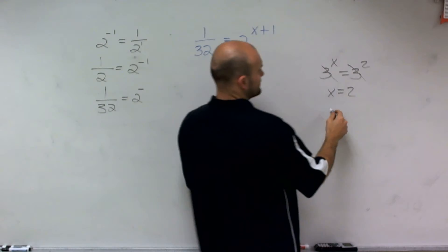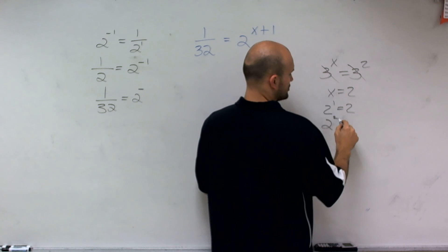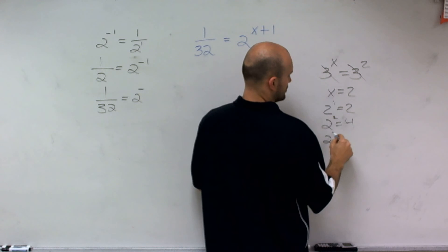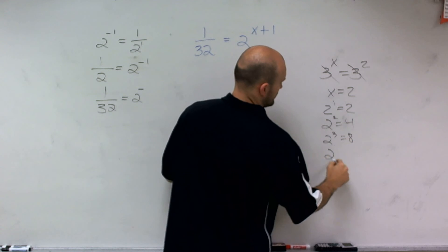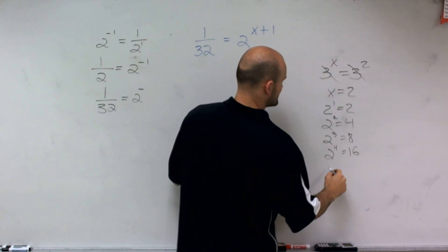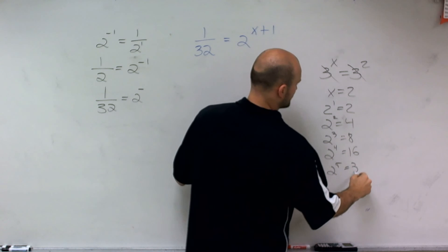So let's just kind of go down the list. 2 to the first power is 2, 2 squared is 4, 2 cubed is 8, 2 to the fourth is equal to 16, and 2 to the fifth equals 32.